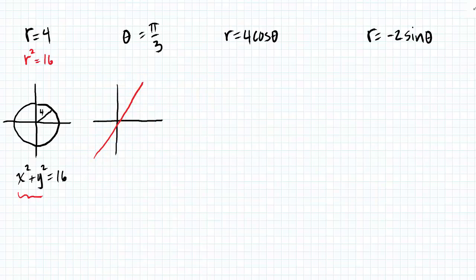So again, we are looking at a situation where one of the variables is missing. So when a variable is missing from an equation, that means that it has no restriction.